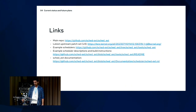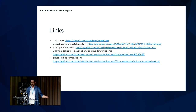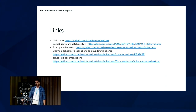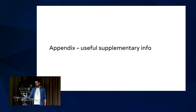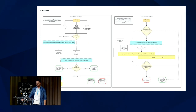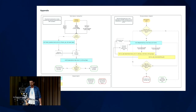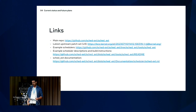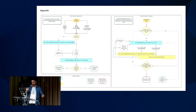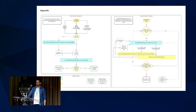Here are some links — feel free to open issues on the repo or send emails to the upstream list so other people can participate. There's a flowchart showing what happens on the enqueue path and the dispatch path. And that's the end of the presentation.